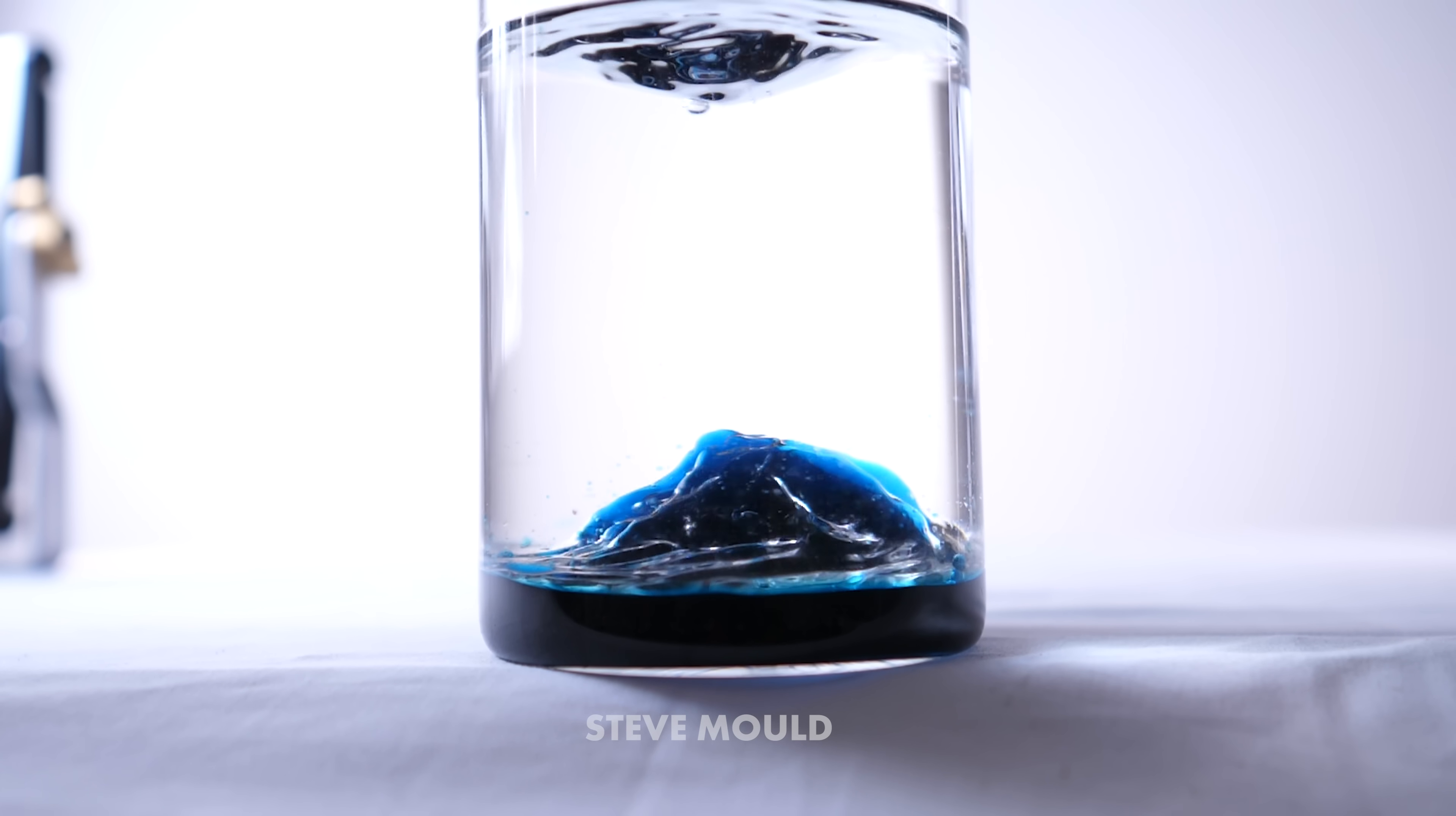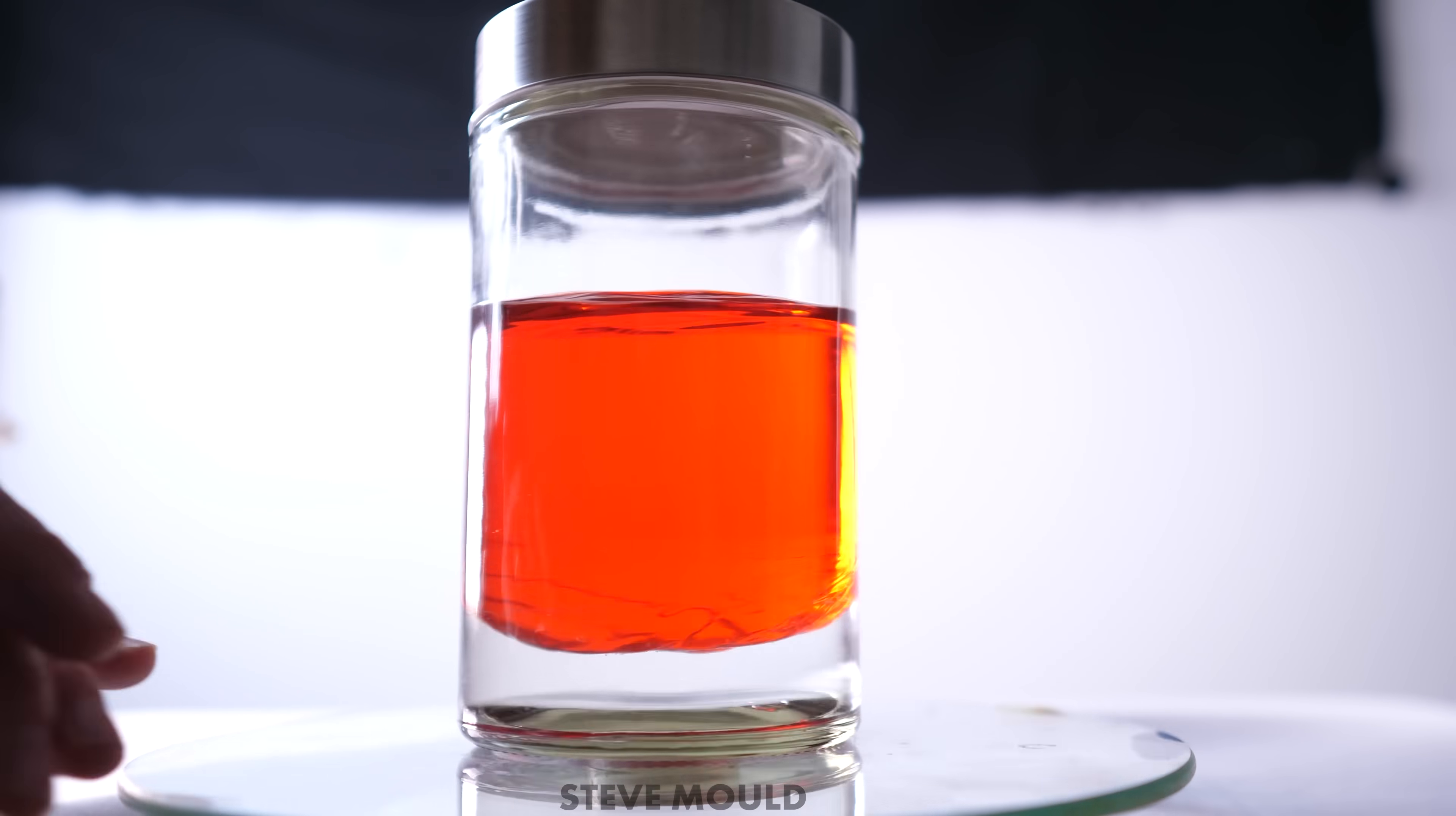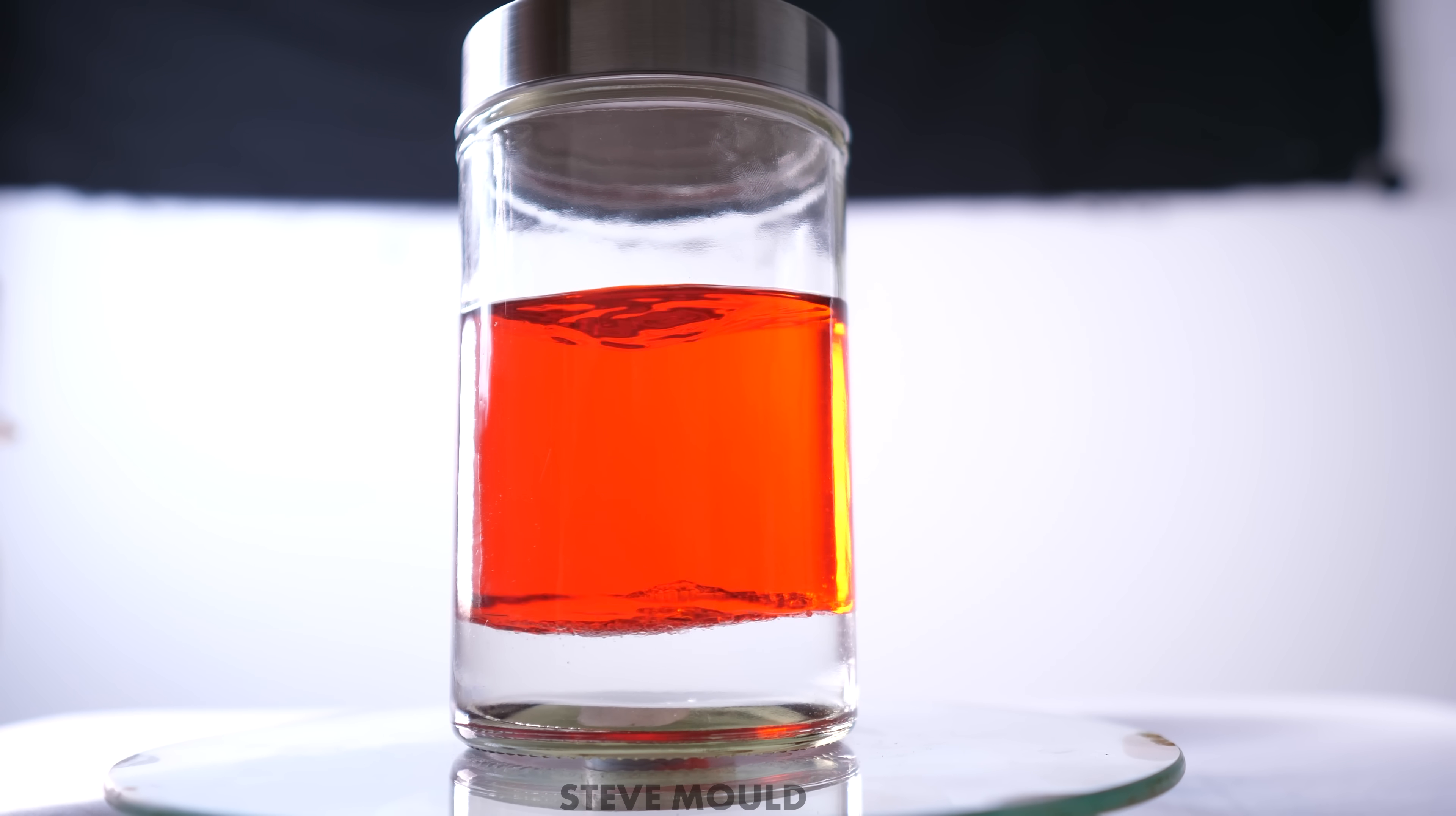So why does the more dense liquid bulge up in the middle? Well, one clue is to test what happens when you spin the whole thing on a turntable. Interestingly, the bulge doesn't appear. It's not that easy to see with the water dyed and the white spirits clear, so in this version I've switched it around. The white spirits are dyed with acrylic paint and the water is clear. You can see how the white spirit bulges down into the water—in other words, the water is thrown out to the edges as we would expect. When I stop the turntable, the liquid continues to spin for a while, and at that point the bulge appears.